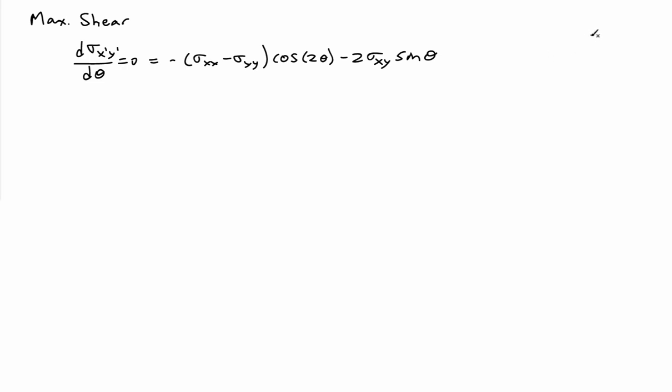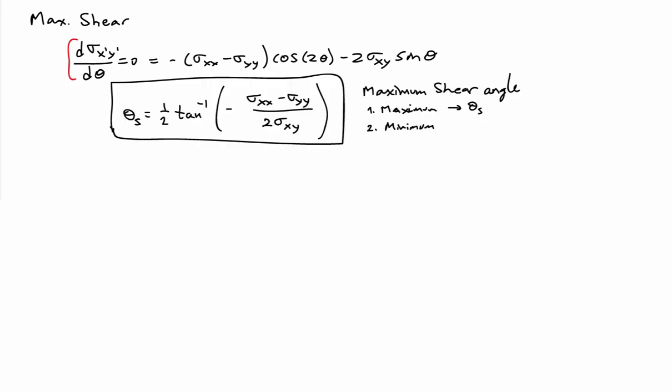If we want to answer the same question about shear, we need to take the derivative of the shear stress in an arbitrary coordinate frame with respect to theta and set that equal to 0. Using the double angle form of the transformation laws, we get an expression we can solve for theta_s, the maximum shear angle. It has a form quite similar to the principal angle — it's one-half the arctangent — but the argument here is minus one over the argument we had for the principal angle. Again, there are two solutions; the one we call theta_s gives the maximum, and the second gives the minimum.